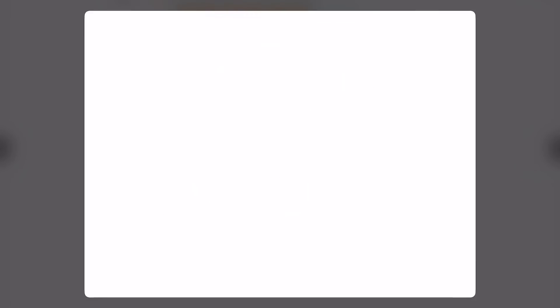As you can see, this is a 10 frame. Inside of each 10 frame, there are 10 objects. There's only place for 10 objects to be in it. So, this is 10, this is another 10, and this is another 10. 10 plus 10 plus 10 equals to 30. Now, on the last 10 frame, we have only two filled places. So, the number is 30 plus 2 equals to 32. You should write number 32 here.